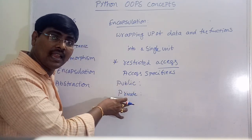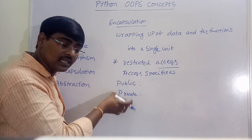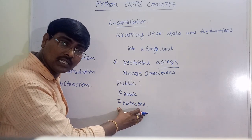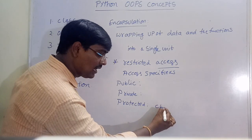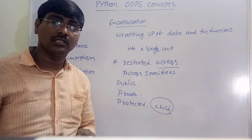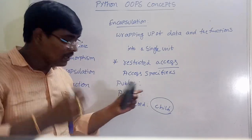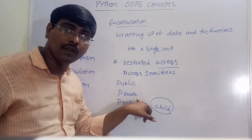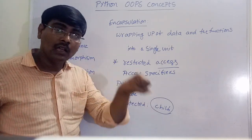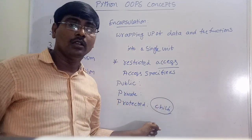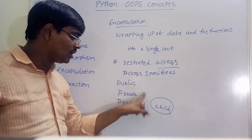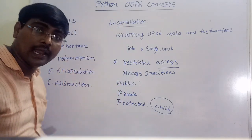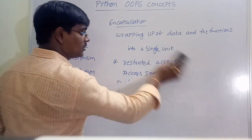private means only the members inside the class — the functions or methods within the class — can access. Protected means only the members inside the class along with child classes can also access. In summary: public — any class can access; private — only members within the class; protected — within the class plus child classes. Providing these restrictions on access is called encapsulation.